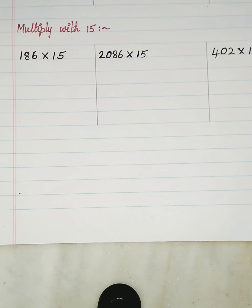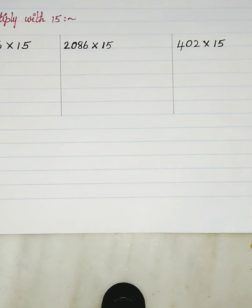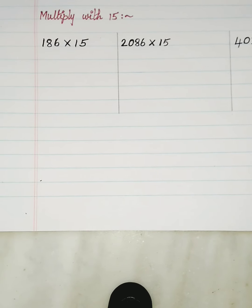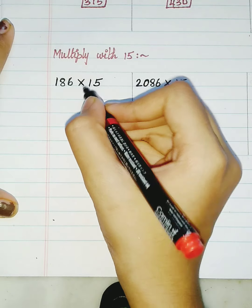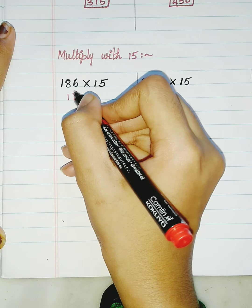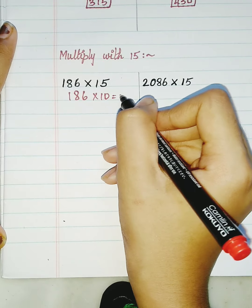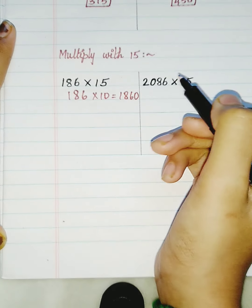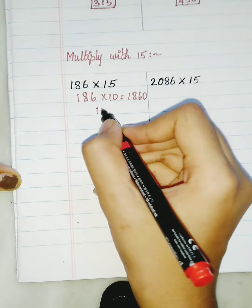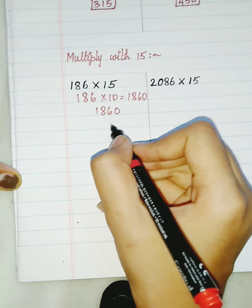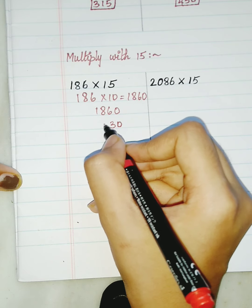Now the second one is multiplication with 15. Multiply the number by 10, and you get the result by adding 0 at the end. Write the result and make it into half — half of 60 is equal to 30, and half of 18 is equal to 9. Add both the numbers.